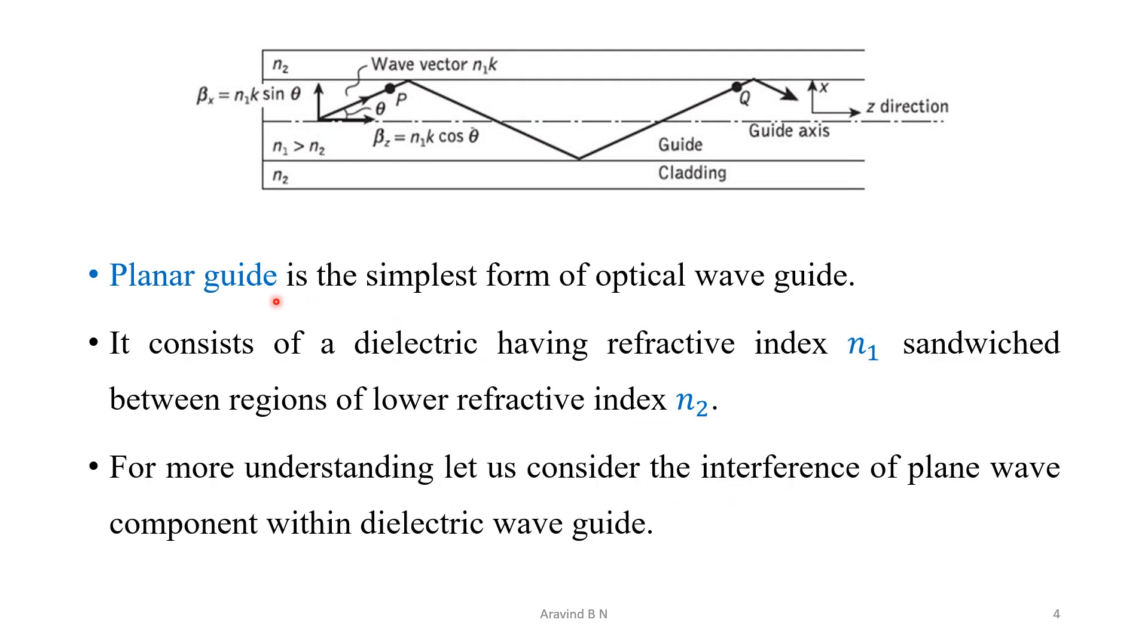A planar waveguide is the simplest form of optical waveguide. It consists of a typical optical fiber-like structure, that is, a dielectric medium with a refractive index of n1 sandwiched between the regions of refractive index n2. So here, first understand this diagrammatic representation.